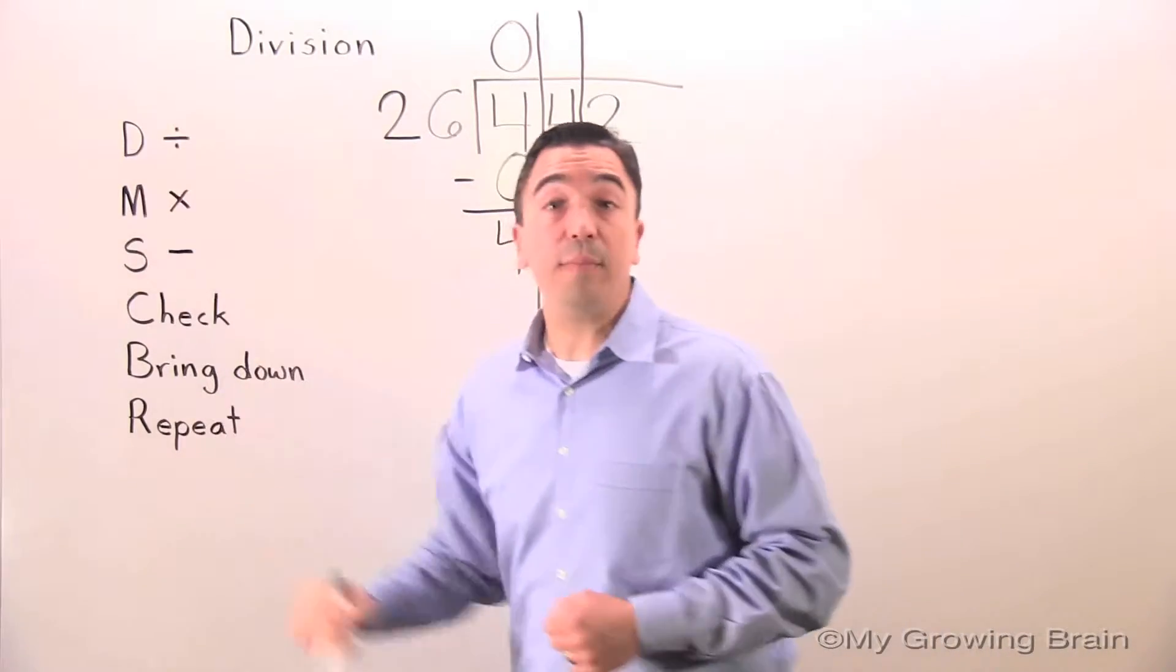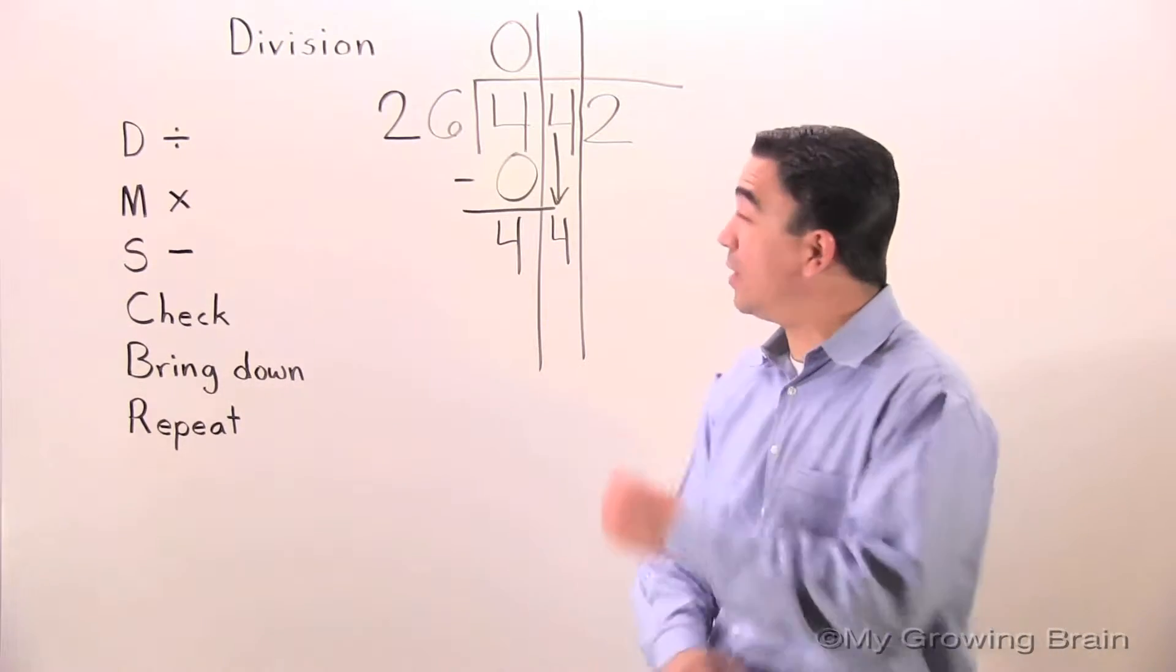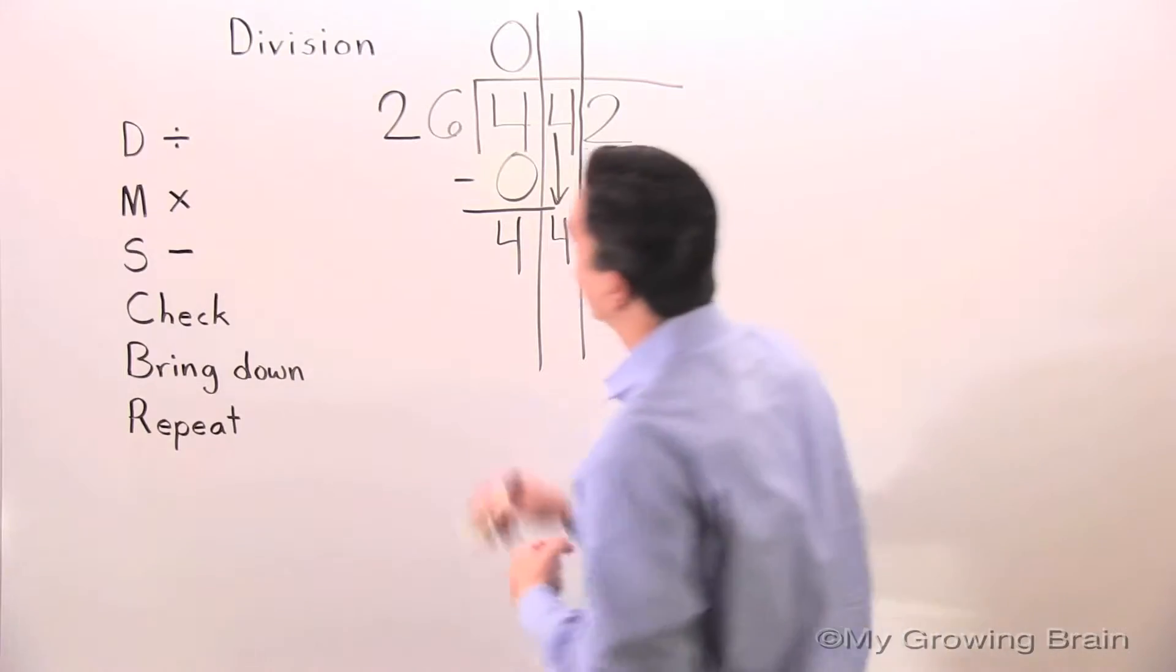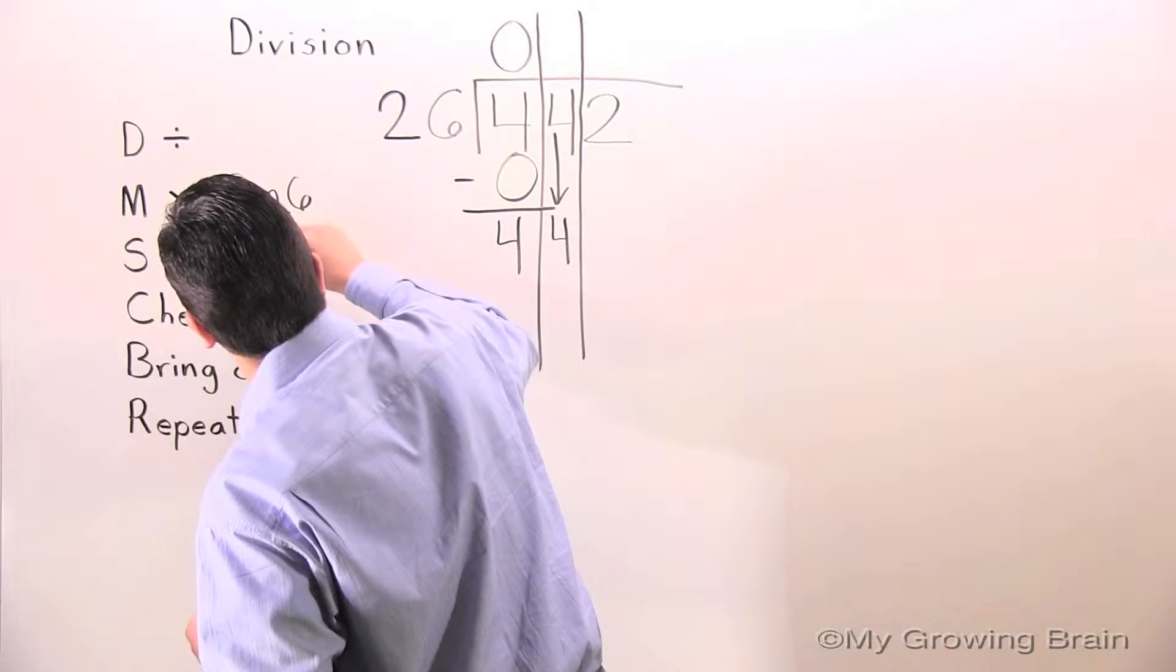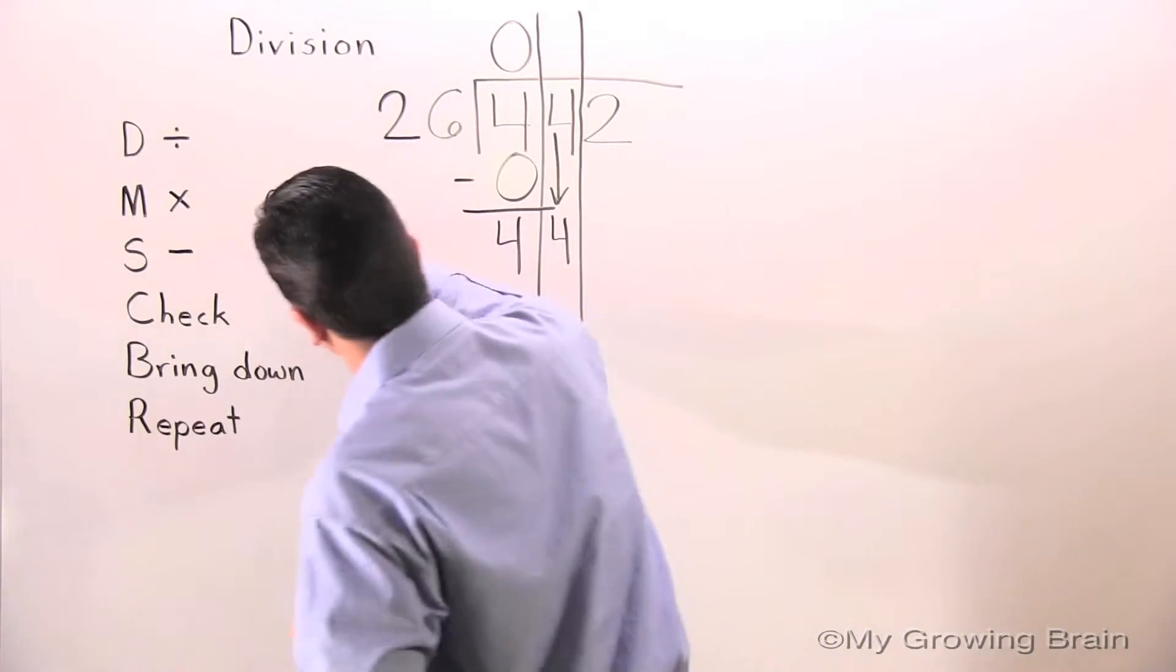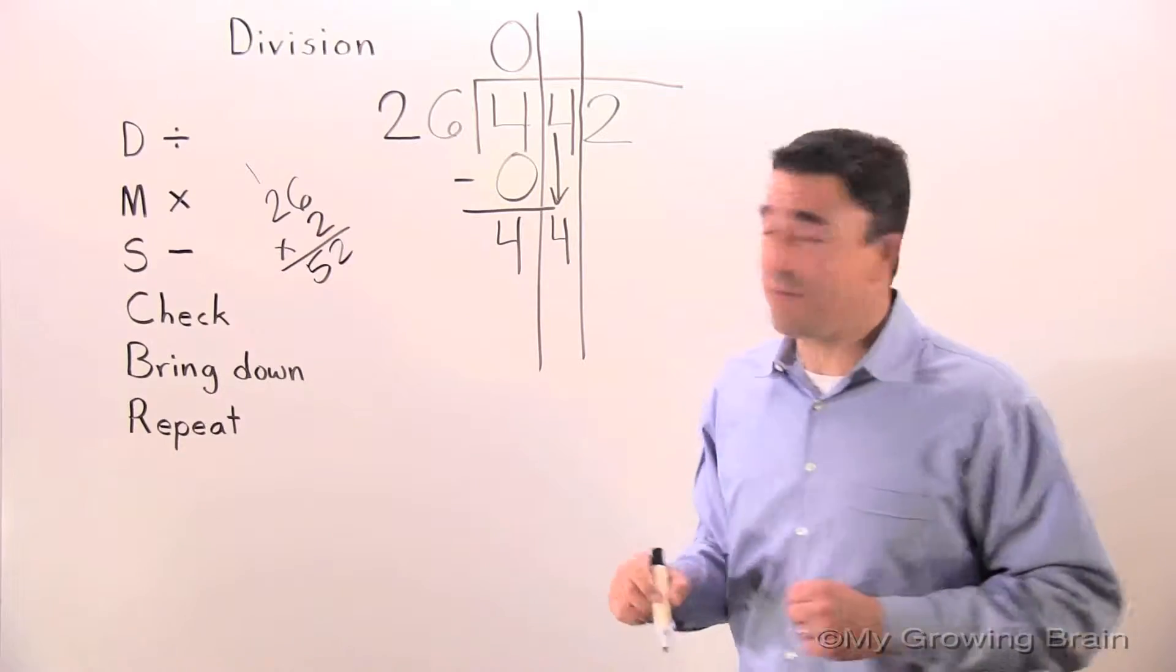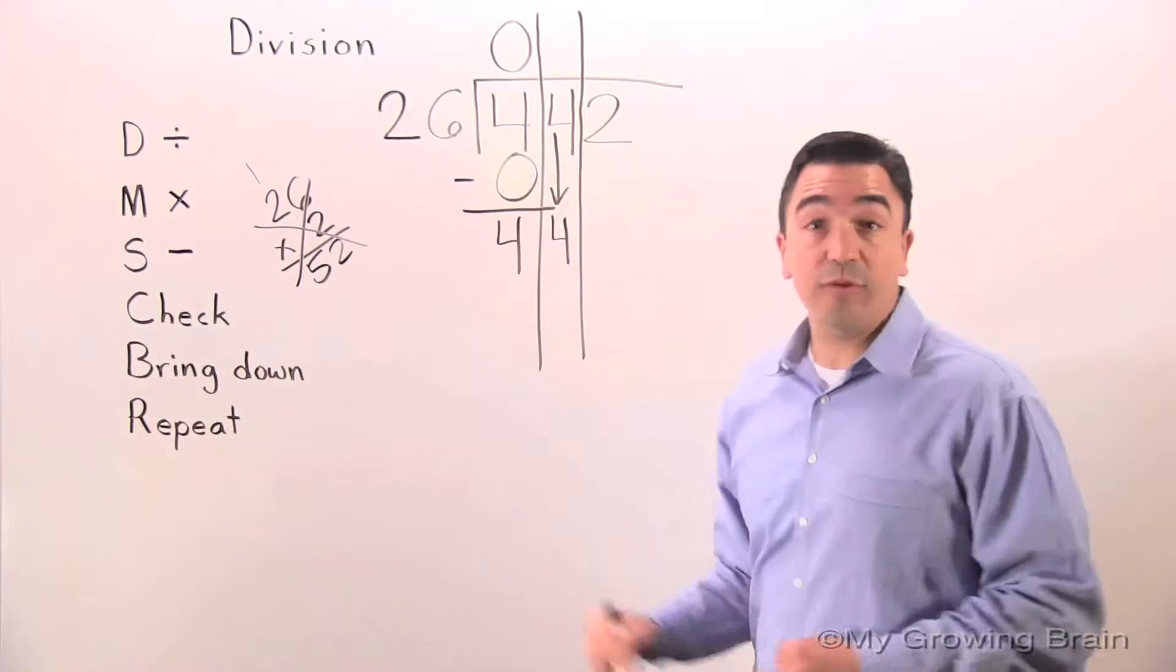Next step. Repeat. Repeat the process from the beginning. Divide. 44 divided by 26 or 26 into 44. I know 26 can go into it once. Can it go into it twice? Let's see. Let's experiment. 26 times 2. 2 times 6. 12. Regroup the 1. 2 times 2 is 4. Plus 1. 5. 52. 52 is a lot bigger than 44. We cannot do it. Therefore, 44 divided by 26. 1.